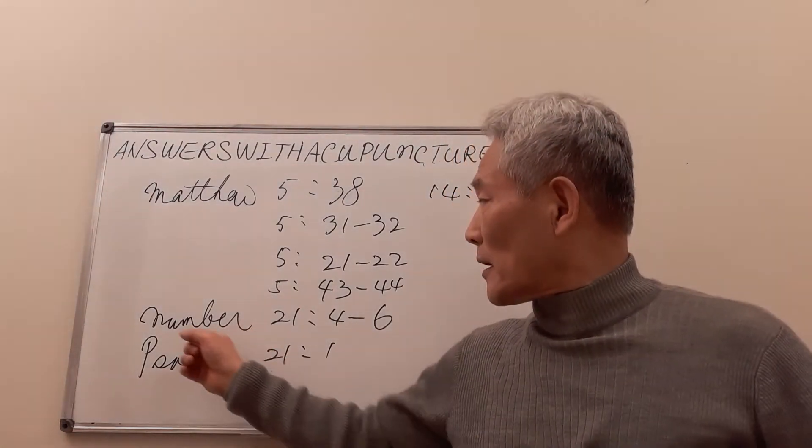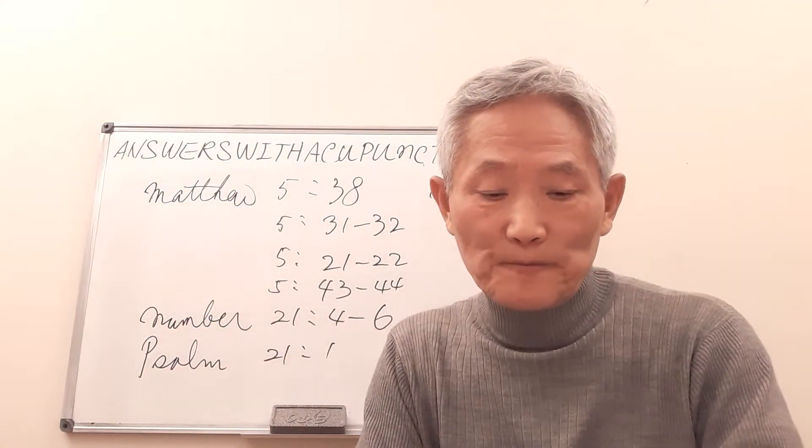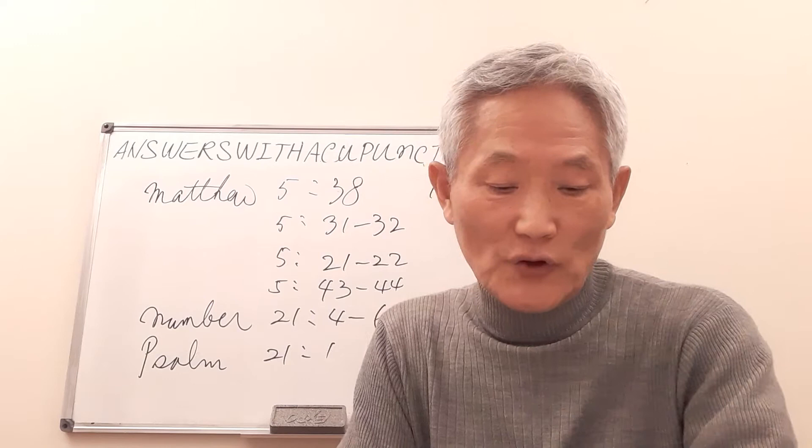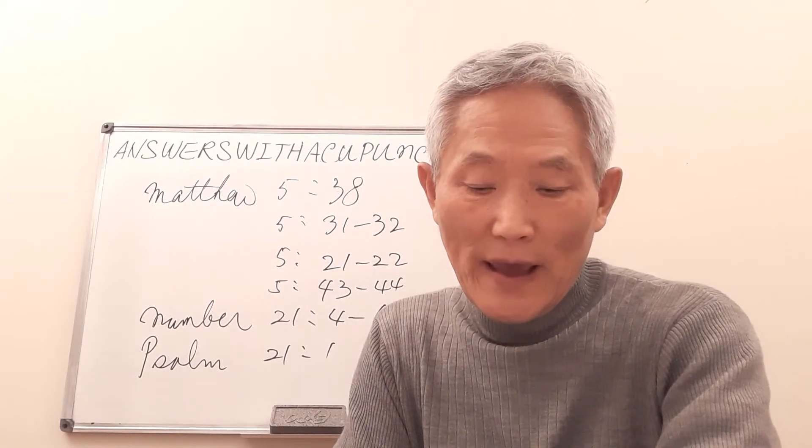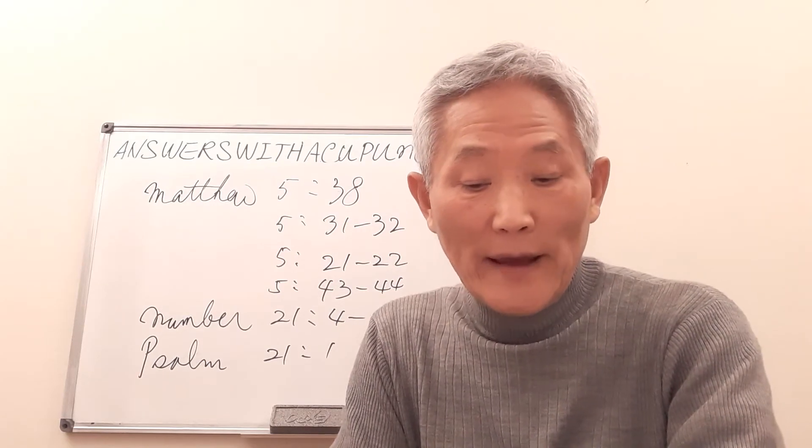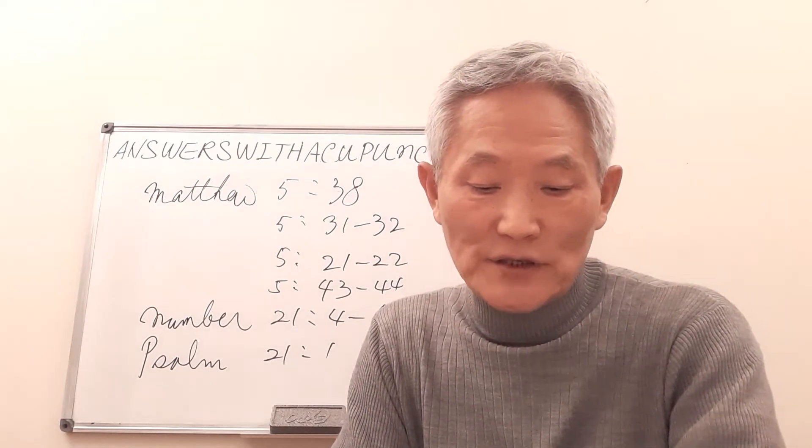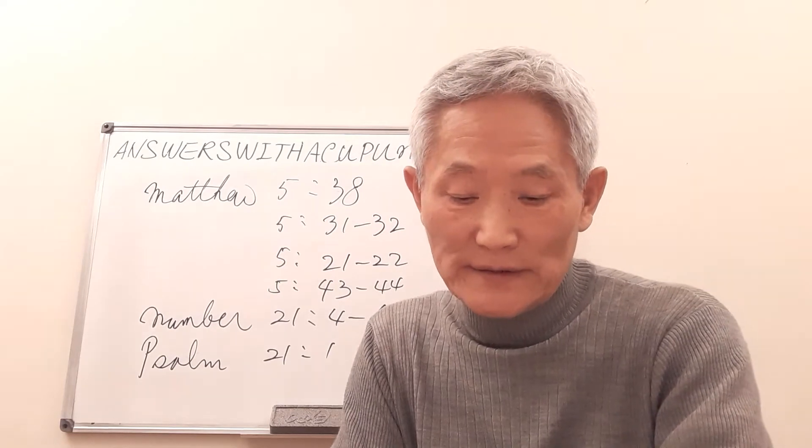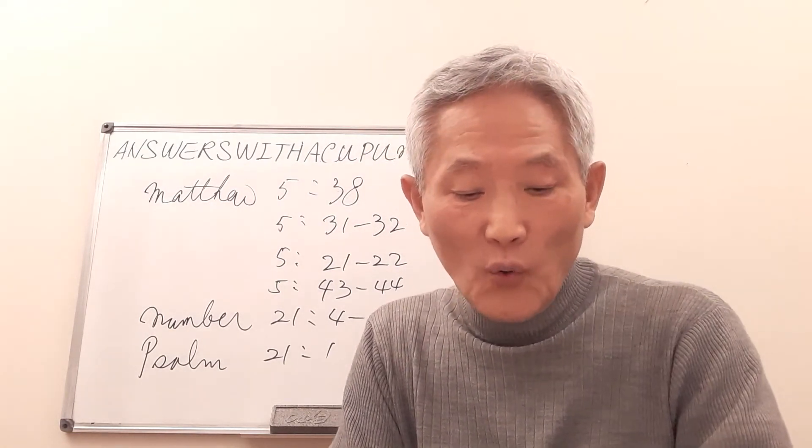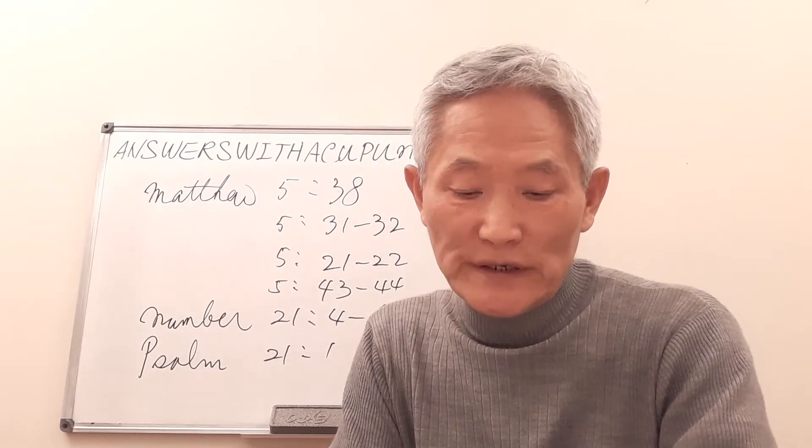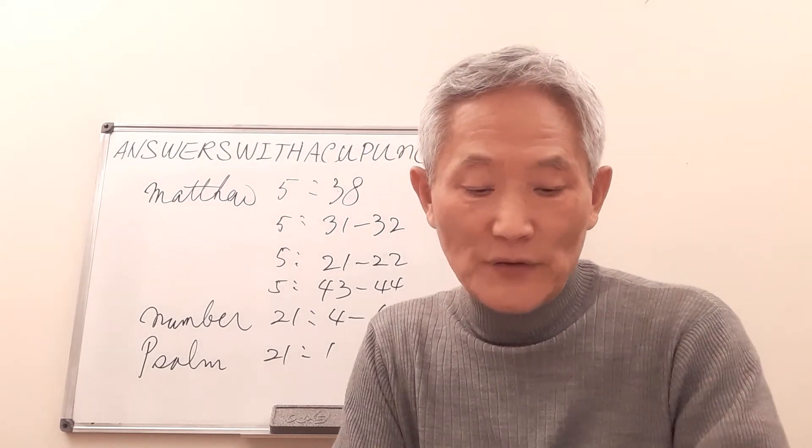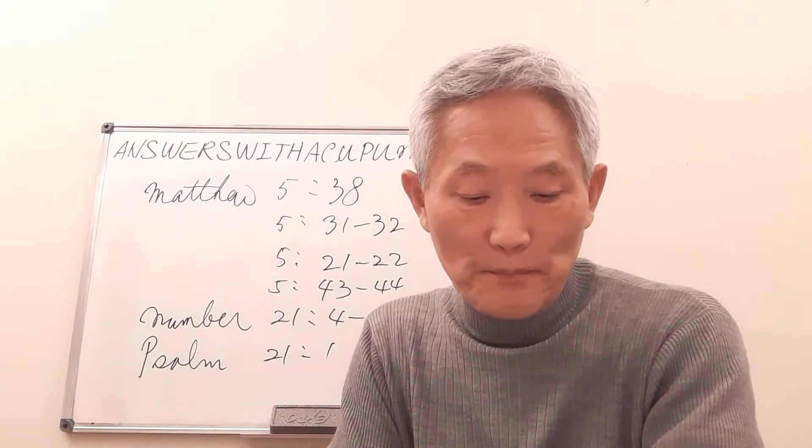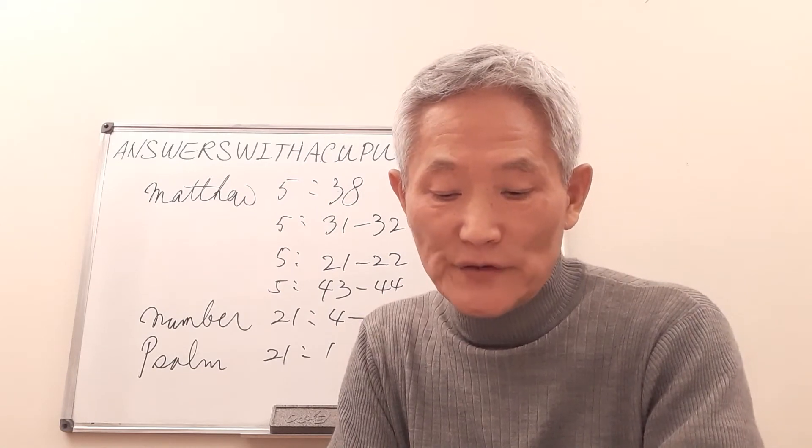Now on Numbers chapter 21 and verse 4: 'From Mount Hor they set out by the way to the Red Sea to go around the land of Edom, and the people became impatient on the way. And the people spoke against God and against Moses, saying, Why have you brought us up out of Egypt to die in the wilderness? For there is no food and no water, and we loathe this worthless food.' Then the Lord sent fiery serpents among people, and they bit people so that many people of Israel died.